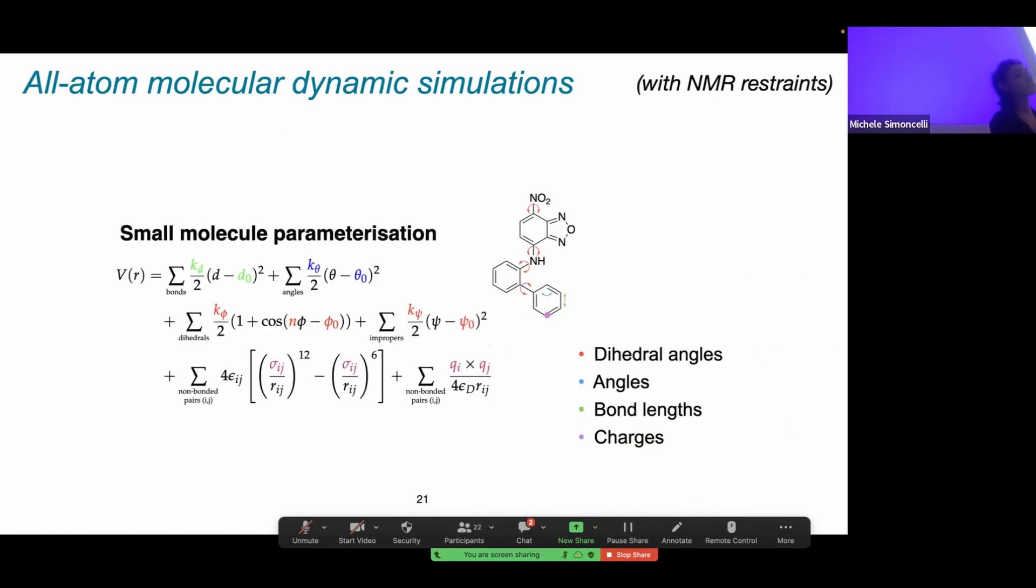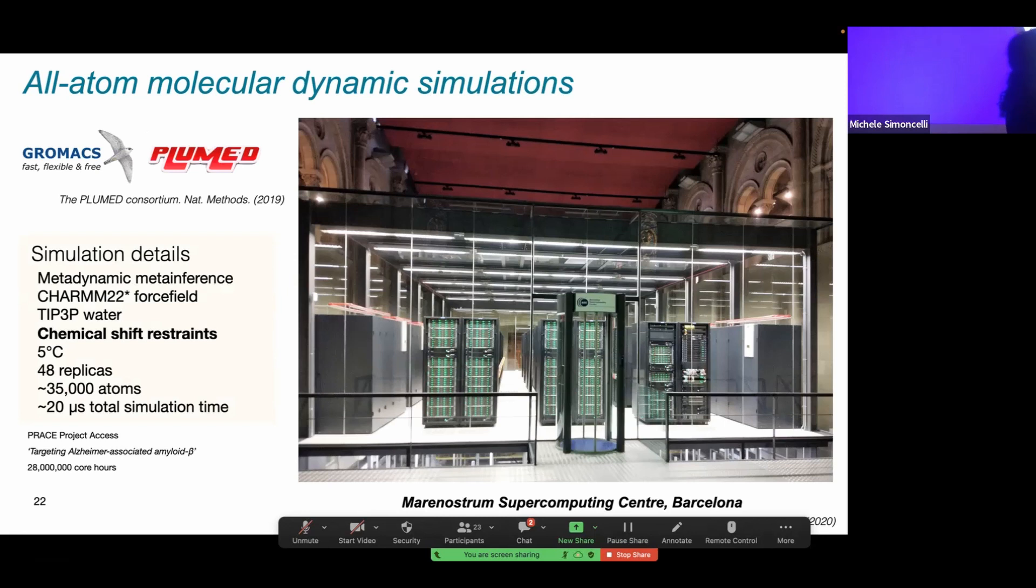On top of this, we also have to take special care in terms of the small molecules. When we introduce these small molecules into our force fields that have been optimized for proteins, oftentimes these small organic molecules will be just kind of approximated as the closest amino acid. We actually go back to the quantum mechanics and do a very careful parameterization. A few extra details about how we set up our simulation. We chose the CHARMM22 star force field with TIP3P water because it was best at recapitulating experimental observables. We're using chemical shift restraints using meta inference metadynamics. We use 48 replicas for a total of 20 microsecond simulation time. For this work, I had the privilege of using the beautiful Mare Nostrum Supercomputing Center in Barcelona, which is housed in a desanctified church.